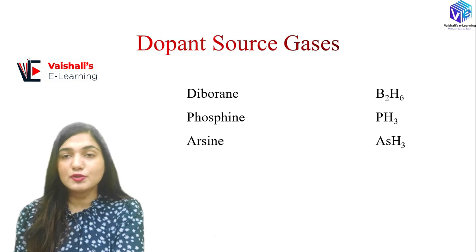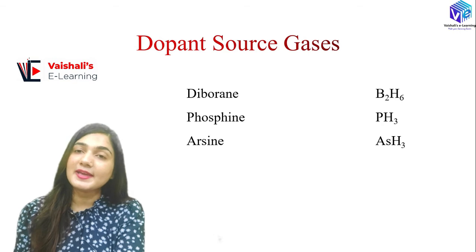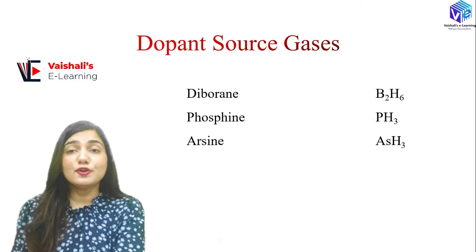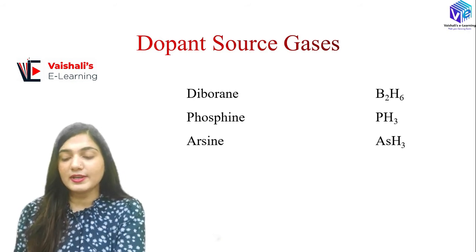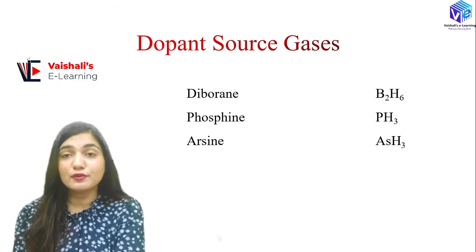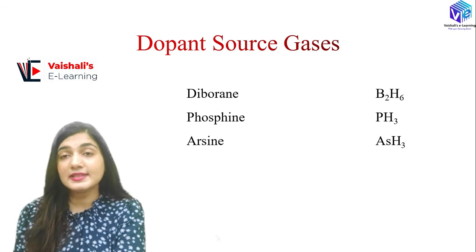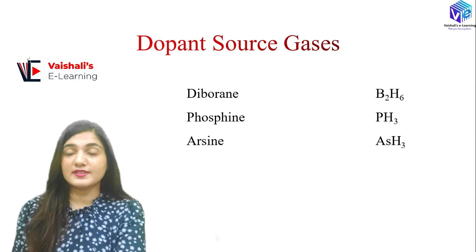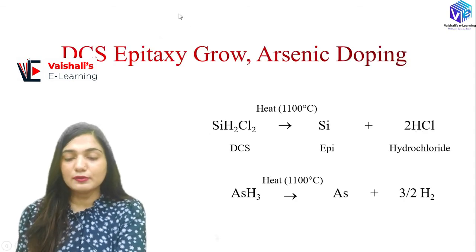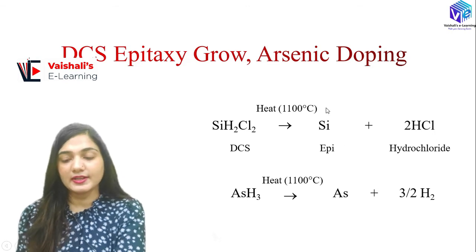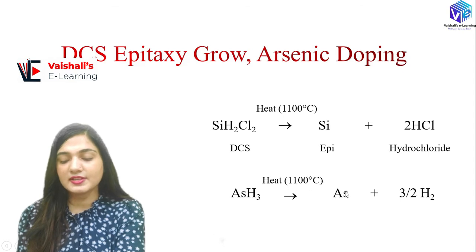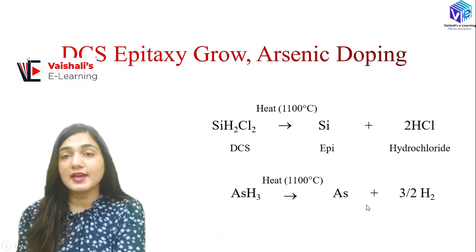Dopant source gases are diborane (B₂H₆), phosphine (PH₃), and arsine (AsH₃) for creating N-type or P-type layers. Dopant source gases are toxic and harmful to humans, so they must be handled very carefully. For dichlorosilane epitaxy: SiH₂Cl₂ with heat provides silicon and 2HCl; this silicon grows as the epitaxial layer. Similarly, AsH₃ at 1100°C provides arsenic plus 3/2 H₂; this arsenic becomes the dopant in the epitaxial layer.